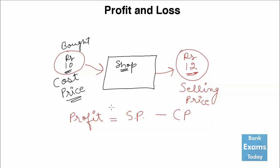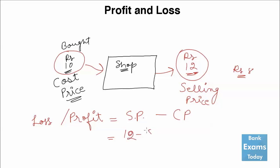For example, you bought a pen for rupees 10 but nobody is ready to buy it for rupees 12. To maintain the flow of your working capital you are selling it for rupees 8 instead. Now the selling price is less than the cost price and you will incur a loss. In case of loss, the selling price is rupees 8 and the cost price is rupees 10, so there is a loss of rupees 2.